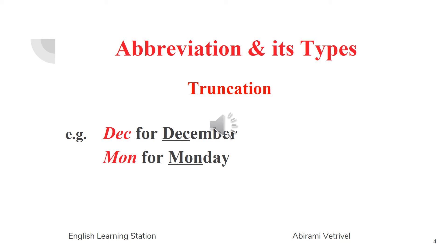The next type of abbreviation is truncation. Truncation is another type of abbreviation which consists of only the first part of the word. For example, we commonly use the truncated form of December as DEC and MON for Monday. So this is what we mean by truncation.